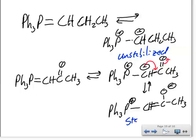So we have a stabilized ylid. Stabilized ylid is going to tend to give us the E or trans form, where the unstabilized ylid is going to give us the cis or Z form.